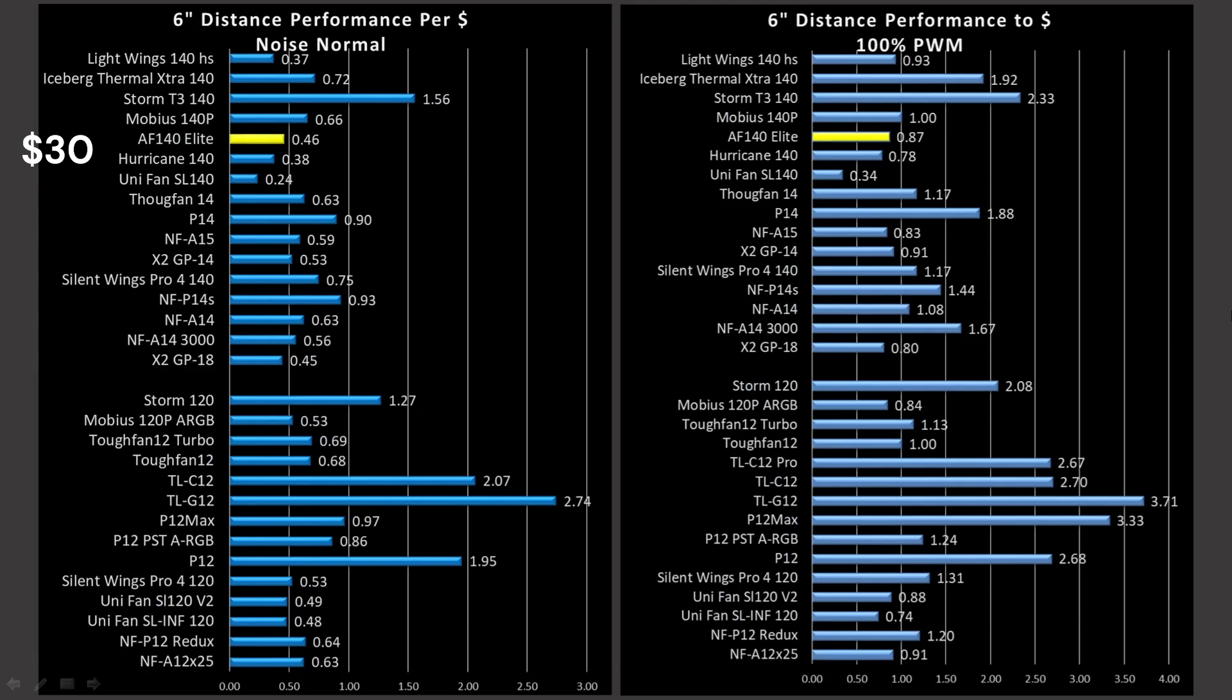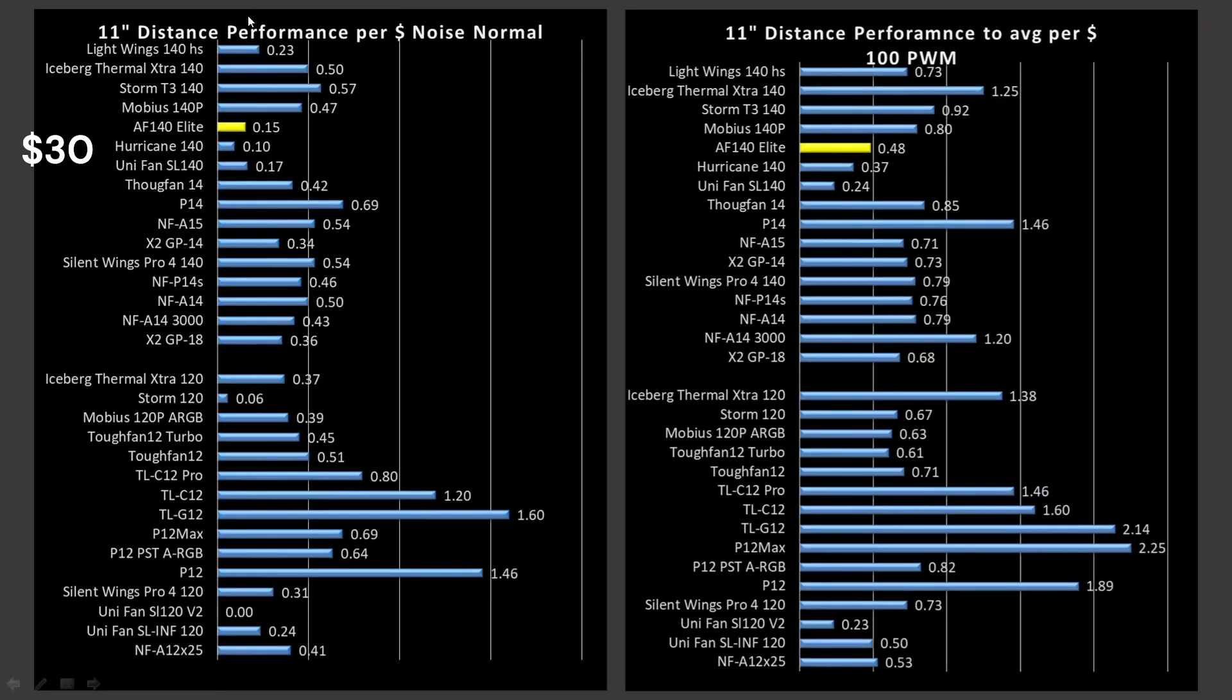The AF-140 Elite is a $30 fan in the non-RGB version. I do believe there is an RGB version. I don't specifically have the pricing on that. But if it's more expensive, you can expect its value proposition to go down. And it's very easy to calculate. You just see my airspeeds from earlier on in the video, and you can get exactly what its value is. And we are looking at the 6-inch mark on this first graph here. The left graphs are going to be all noise normalized. The right graphs are going to be all 100% PWM fan signaling. And so we have the results. Well, the AF-140 is pretty bad. At the 11-inch mark noise normalized, it's very, very, very, very incredibly underperforming.